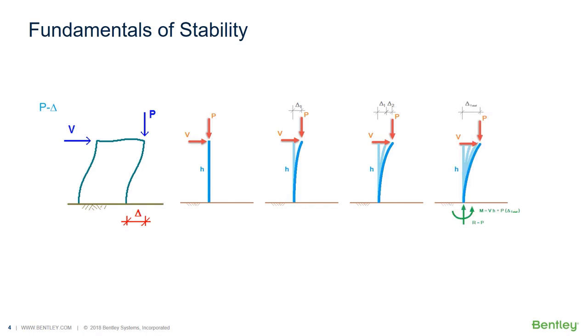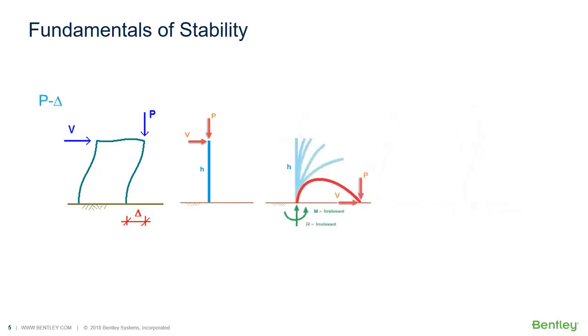In this simple example, the design moment is not merely V times H, but rather V times H plus P times delta total. If the structure is not stable, rather than converging on the final position, it will collapse. This condition is critical and is not detected by a traditional first order analysis. A second order analysis of some type must be performed.